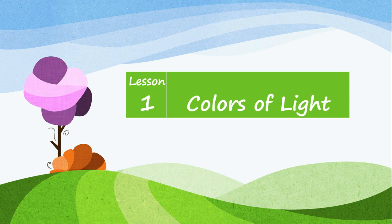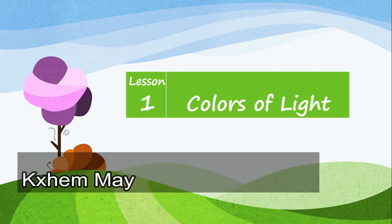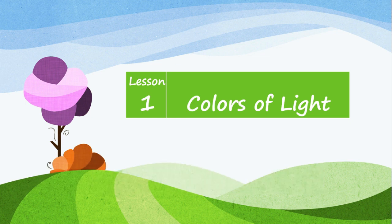Lesson 1: Colors of Light. Naisip mo ba kung paano nabuo ang isang marilag na bahaghari? Bakit nakakita tayo ng mga kamangha-manghang mga kaganapan sa kalangitan? Tulad ng tulang paglubog ng araw, asul na langit, at mga bahaghari? Paano tinutukoy ng palipas at mga pag-aayos ng kulay? Sa araw na ito, susubukan nating hanapin kung paano magbalat ang ilaw at mabuo ang mga kulay.